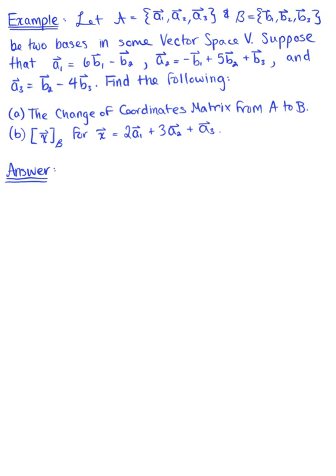Let a and b be two bases in some vector space V. Suppose that vector a₁ is equal to 6 times vector b₁ minus vector b₂. That vector a₂ is equal to minus vector b₁ plus 5 times vector b₂ plus vector b₃. And let vector a₃ be equal to vector b₂ minus 4 times vector b₃.